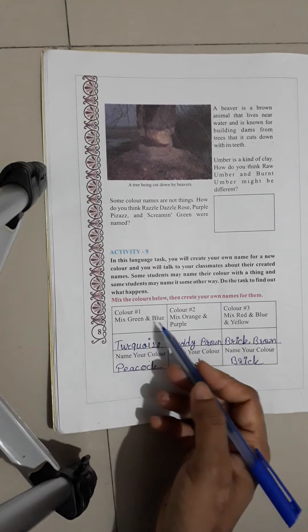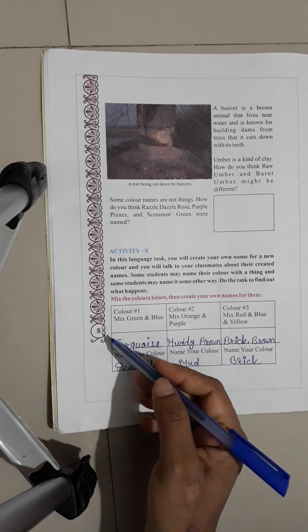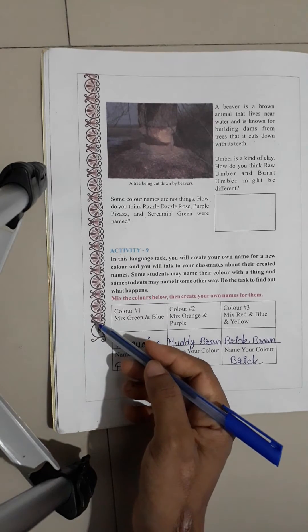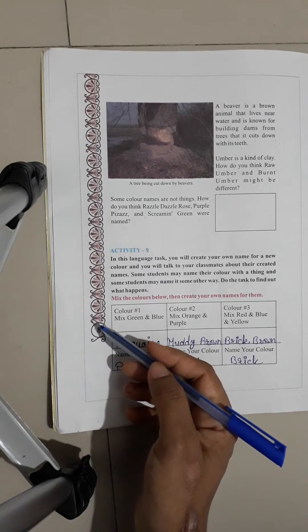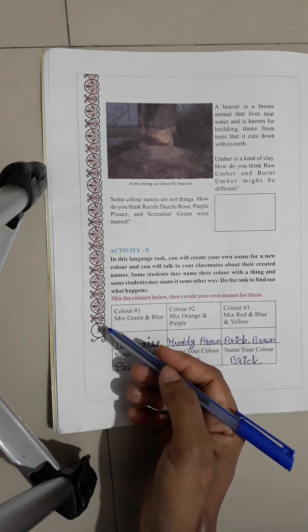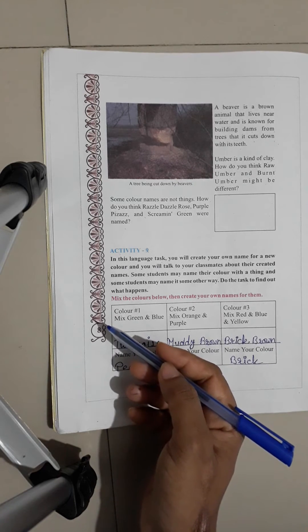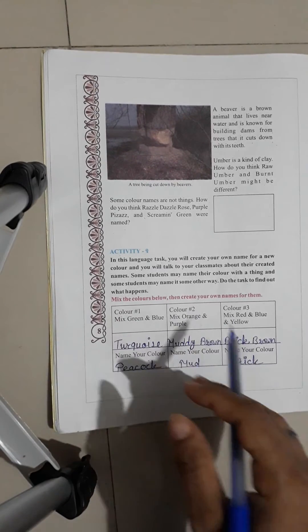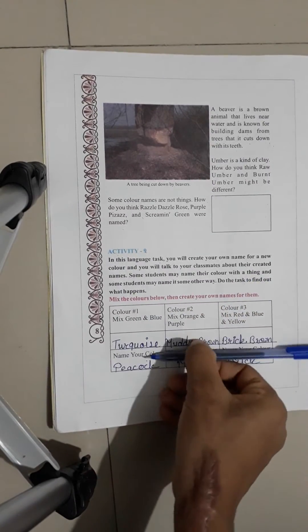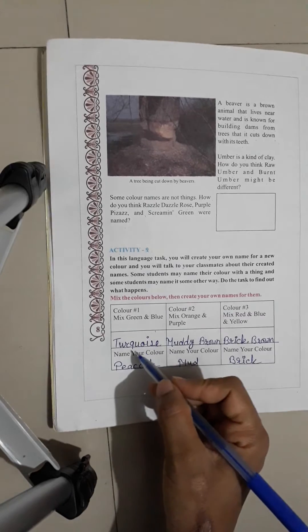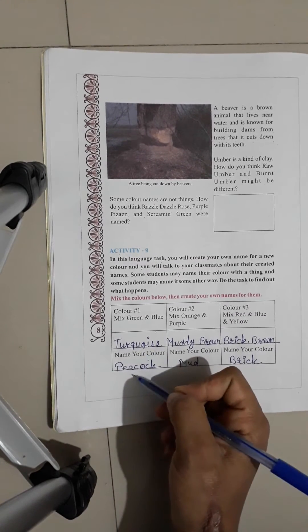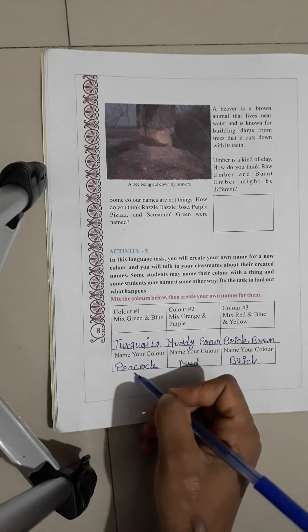Mix green and blue. When you take two colors, we have two shades of green color. A green color, a broad color is a parrot color. Mix green and blue color, which color can you get? Turquoise. Peacock color.